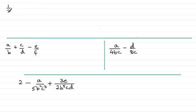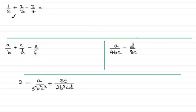Suppose I had a half plus two-thirds minus three-quarters. In order to do something like this, because they've got different denominators — two, three and four — we need to find a number, preferably the lowest common multiple of the numbers in the denominator. The lowest common multiple of two, three and four is twelve. They all go into twelve.